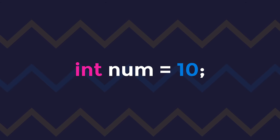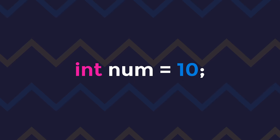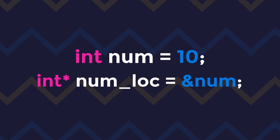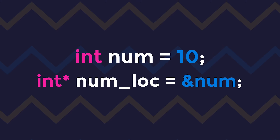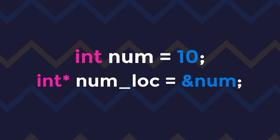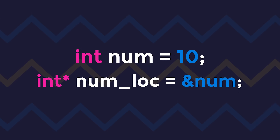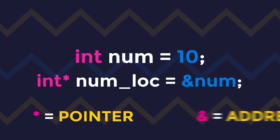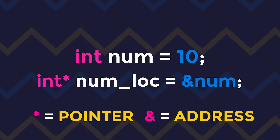Now let's shift our focus to pointers themselves. As mentioned earlier, pointers are basically just addresses. A way to understand how they work is through an example. Let's say we declare an integer variable called 'num' and assign it the value of 10. Now we define another variable, but this time instead of int, we use int star, and name it 'num_loc' for the location of the number. We assign it the value of ampersand num. The asterisk symbol is another way of saying the variable is a pointer — in this case an integer pointer. The ampersand represents the actual address of the variable in the block of memory.